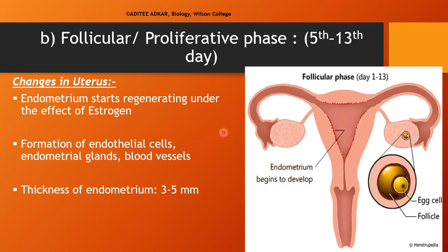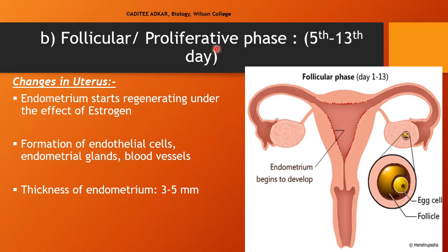Under the effect of estrogen being released from the ovarian follicles, the endometrial lining starts thickening again. The endometrium regenerates and the endometrial glands and blood vessels are re-formed. The thickness of the endometrium, which had reduced to around 1 mm in the menstrual phase, now becomes 3 to 5 mm. Because the endometrium is proliferating or regenerating, this phase is called the proliferative phase; and because follicles are developing in the ovary, it is also called the follicular phase.